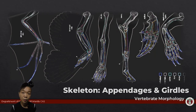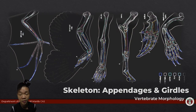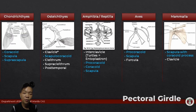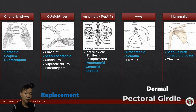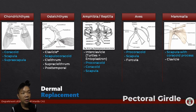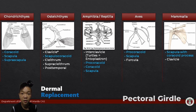To understand how we got here, we must first get to know the basic components of the appendicular skeleton, starting with the brace to the actual skeleton, which would be the girdles. Pectoral girdles brace the anterior pair of appendages and are composed of both replacement and dermal bones. Evolutionarily speaking, they're said to have arisen from the basal elements of the fish fins, which we will get to in later portions.